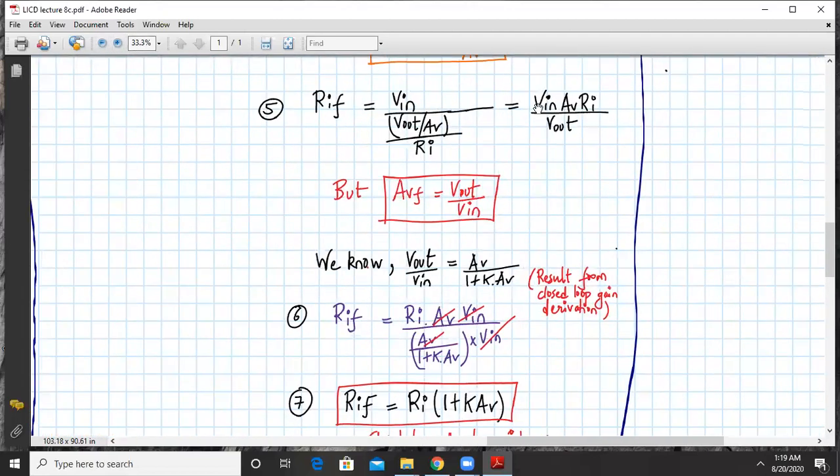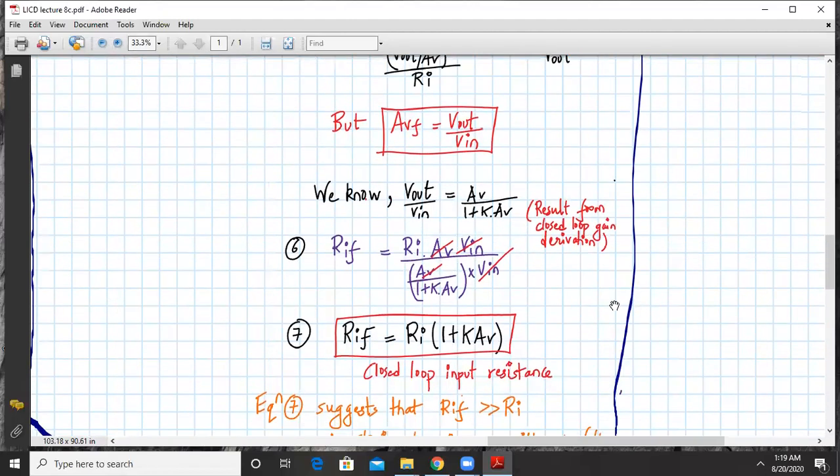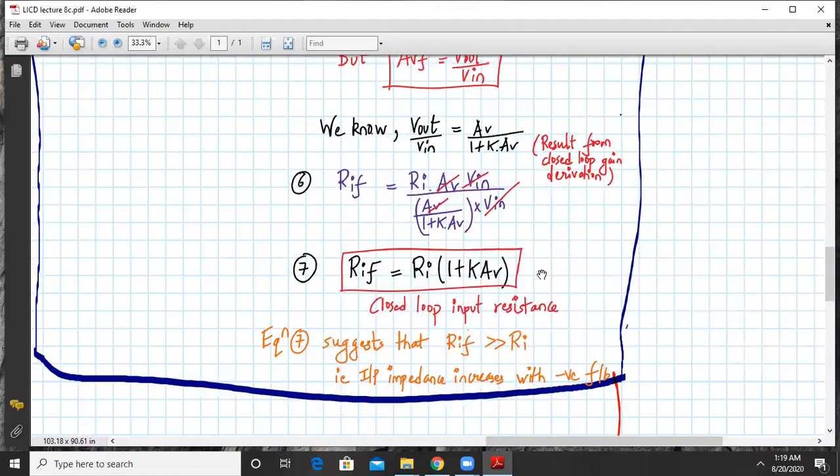So RIF will be RI into AV into V in divided by AV into V in divided by 1 plus K times AV. From the denominator and numerator, AV times V in is cancelled out. We have left out with a term of RIF which is given by RI into 1 plus K times AV.